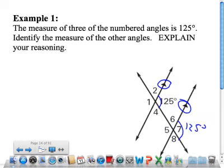So that's 125, and then it should make sense from the previous chapter. We know that these two angles have to be congruent, vertical angles, and these two angles also have to be congruent because of vertical angles. So those are the angles that have to have a measure of 125.